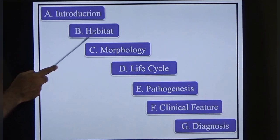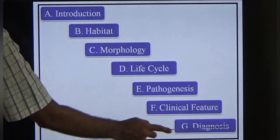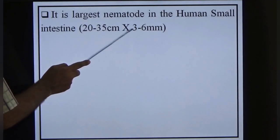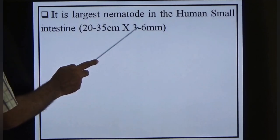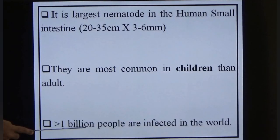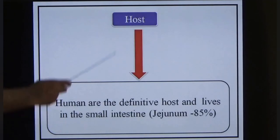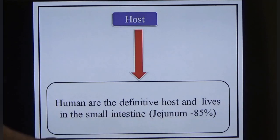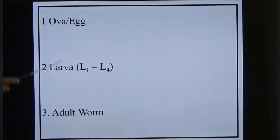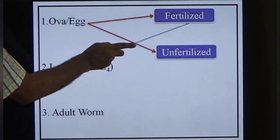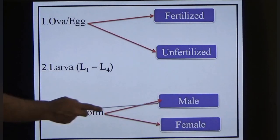Introduction to ascariasis: Ascaris lumbricoides is the largest intestinal nematode of humans, measuring 20–35 cm in length and 3–6 mm in width. It is most common in children. More than 1 billion people are currently infected worldwide. The definitive host is the human; it lives mainly in the upper small intestine (85%) with 15% in the cecum. Morphology includes three stages: ova, larva, and adult worm.